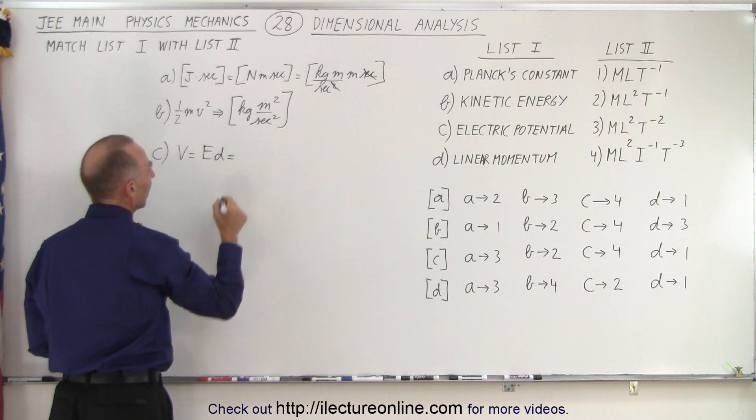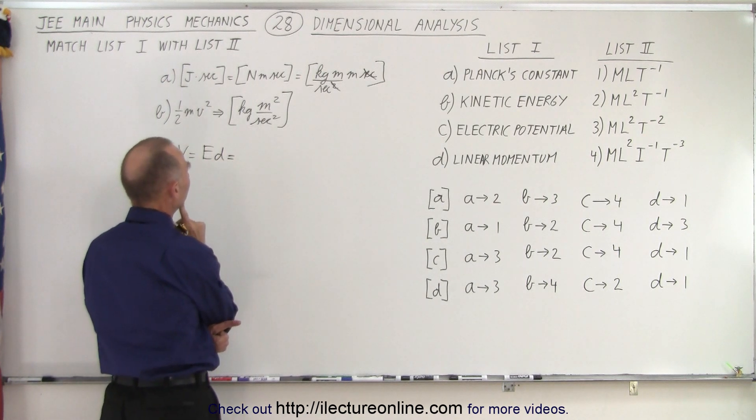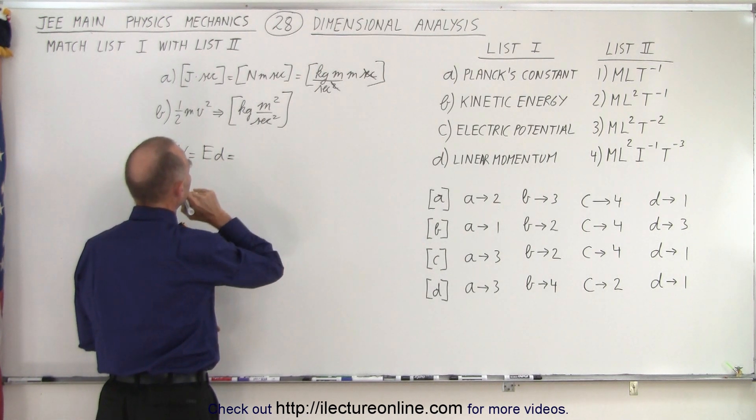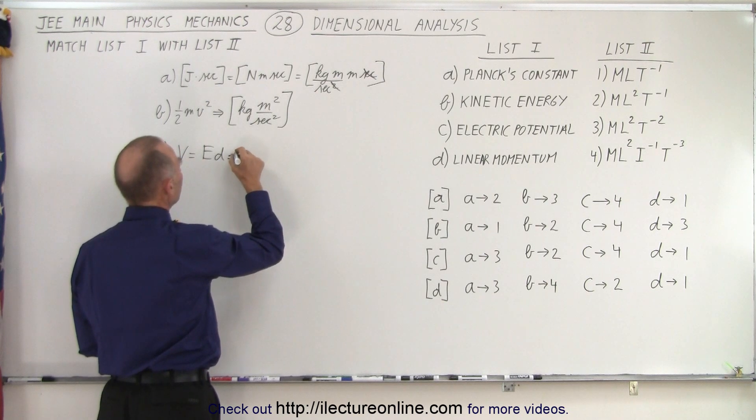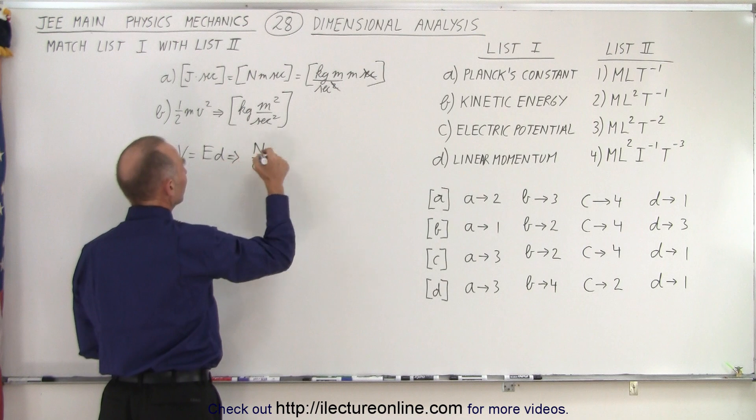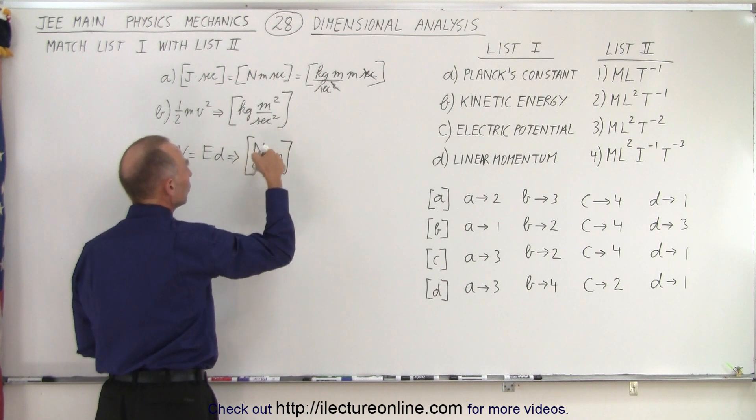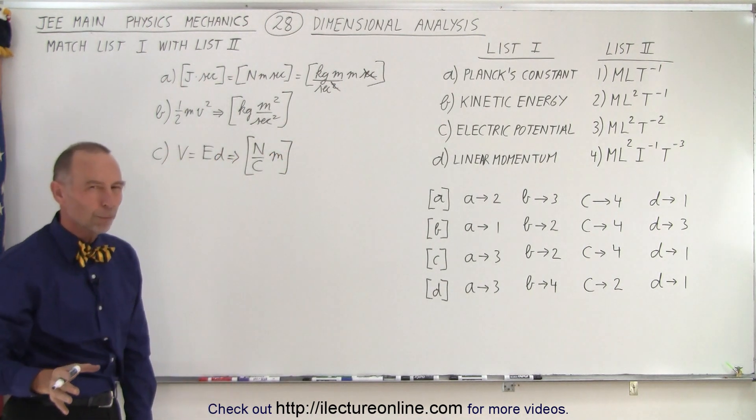And electric field can be expressed in terms of, let's see, newton. So unit-wise, electric field can be in newtons per coulomb times distance which is meters. Now we know what a newton and a meter is, but how about a coulomb?